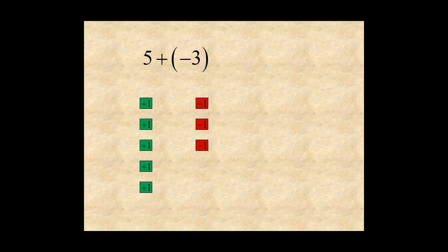If you match three negative tiles with three positive tiles, you have three zeros which you can remove. What's left is two positive tiles. So five plus negative three equals positive two.